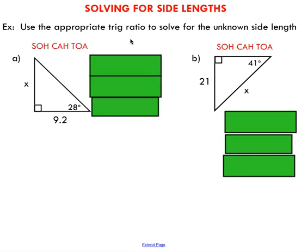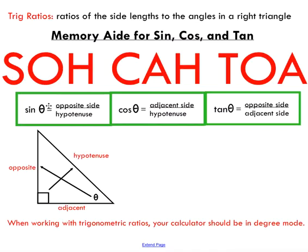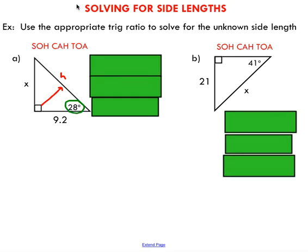So solving for side lengths using trig ratios. Our example here says use the appropriate trig ratio to solve for the unknown side length. The first thing we need to do, I always like to label the triangle. This guy right here tells us that this side is the hypotenuse. I'm looking at this 28 degree angle, our angle in question. In all of these trig ratios, there's this little symbol called theta, not feta. It's theta, T-H-E-T-A. This refers to the angle in question. With respect to that angle, this side here would be our opposite side, the side opposite to the angle, which means that this side here is the adjacent side. Adjacent just means next to.